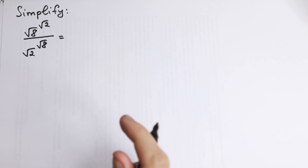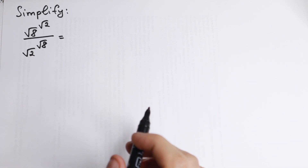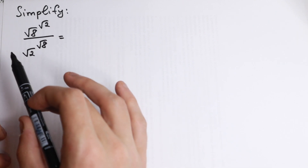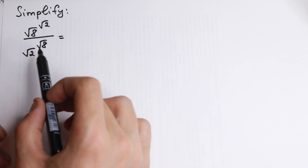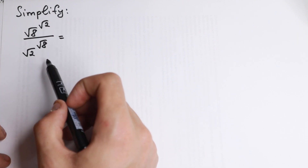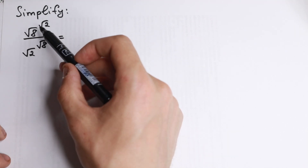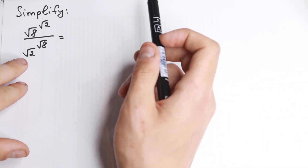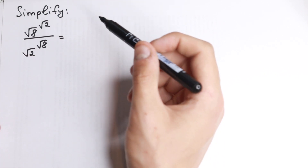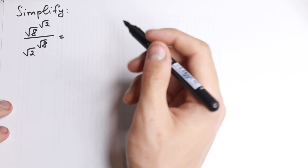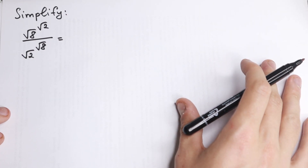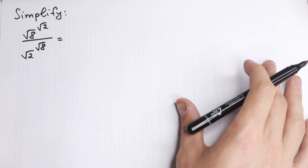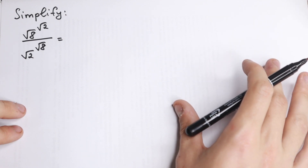Hello everyone, welcome back to higher mathematics. Really interesting problem today — there are no variables x, y, and t. We have a really good problem: we need to simplify this. We have square root of 8 to the power square root of 2, and in the denominator we have square root of 2 to the power square root of 8. This is a really good problem for those who don't know about powers, so I suggest you solve it with me.